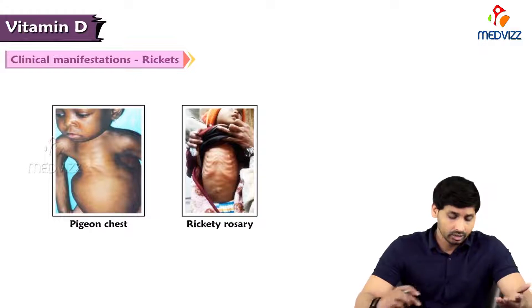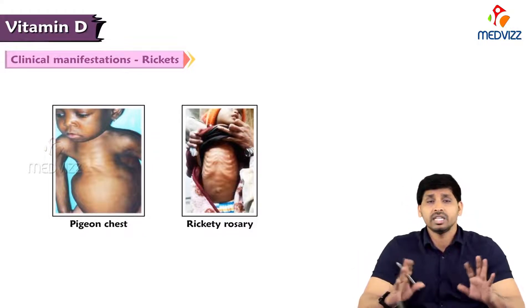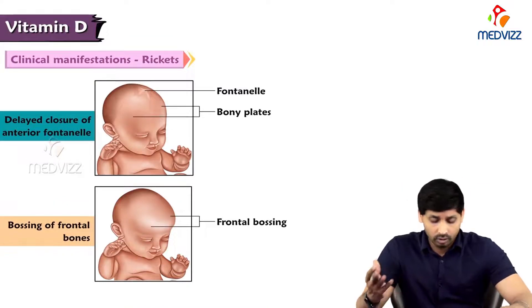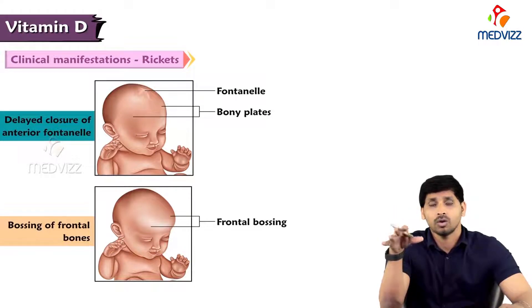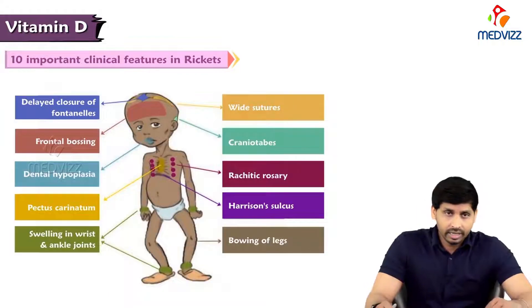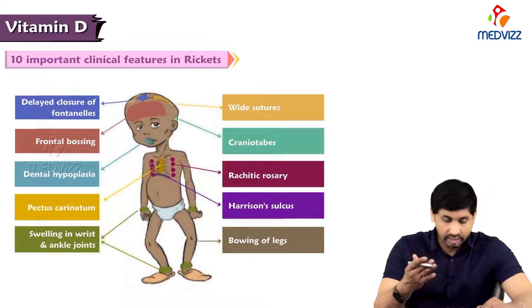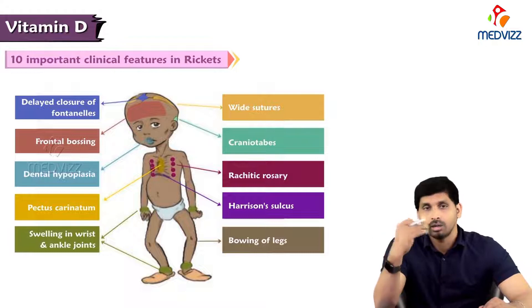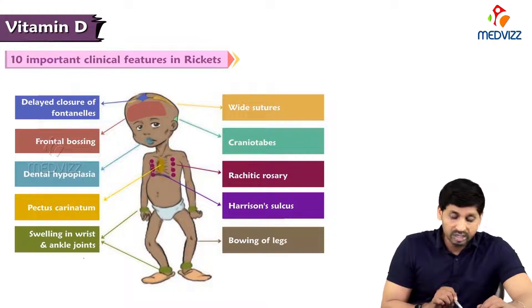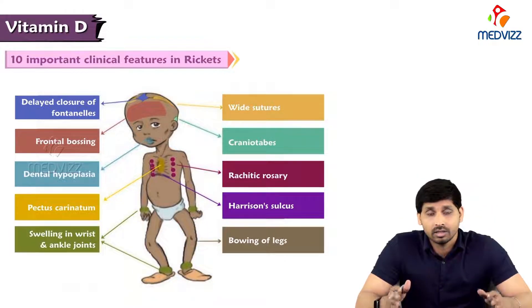Not only the legs — pigeon chest and rickety rosary also occur, meaning improper diffusion and development of the ribcage bones. There is also delayed closure of the anterior fontanelle; the skull bones do not join properly, leading to an embossed or bulged skull, known as frontal bossing. The ten important clinical features of rickets from head to toe are: delayed closure of fontanelle, frontal bossing, enamel hypoplasia, delayed dentition, pectus carinatum, swelling in wrist and ankle joints, wide sutures, craniotabes, rickety rosary, Harrison's sulcus, and bowing of legs.